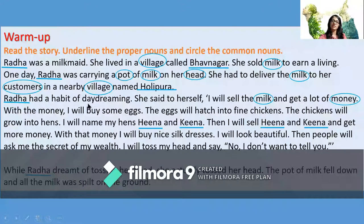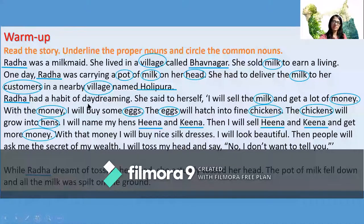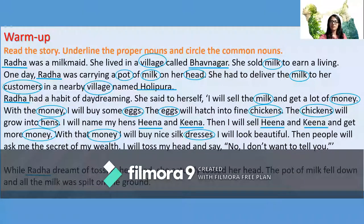More common nouns: milk, money, eggs, chicken, silk dresses. Money could be from France, America, Australia, or India — it is a general term. Dresses could be any kind of dress, like cotton dress. But if you refer to a specific brand, then only it will come under the category of proper noun.